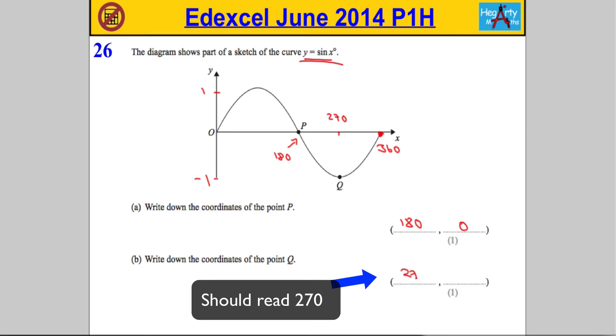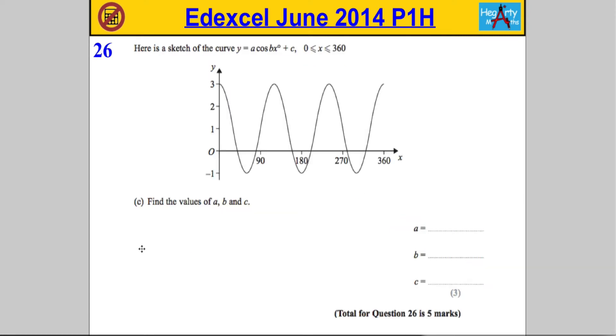Okay, part c here. We're given the sketch of the curve y equals a cos bx plus c, and that goes between 0 and 360, and we're asked to find the values of a, b, and c. So essentially this is a graph transformation question.